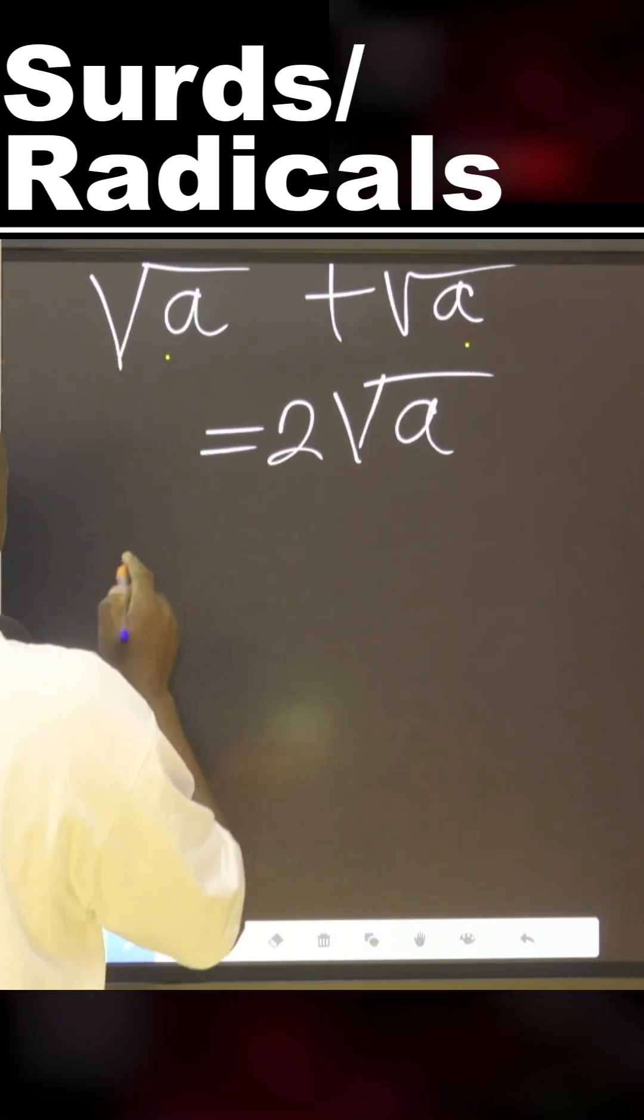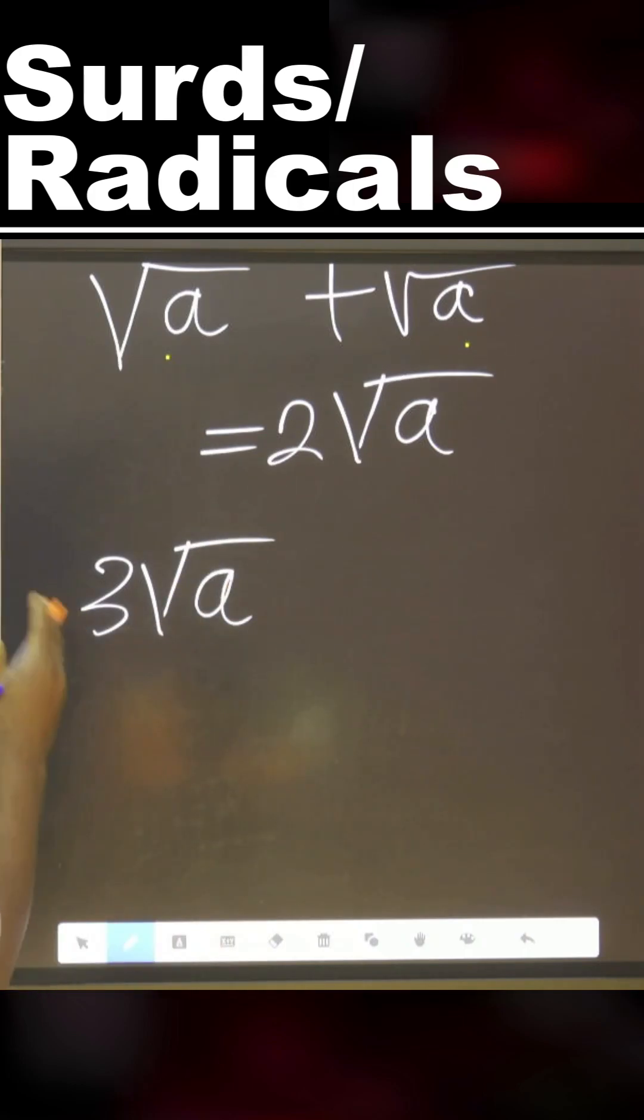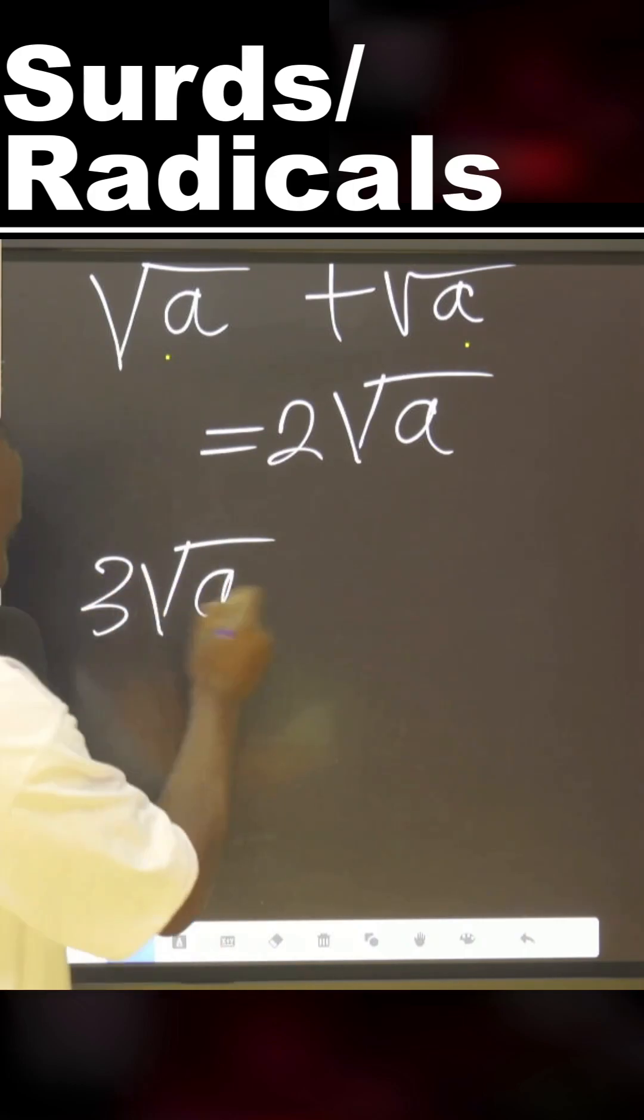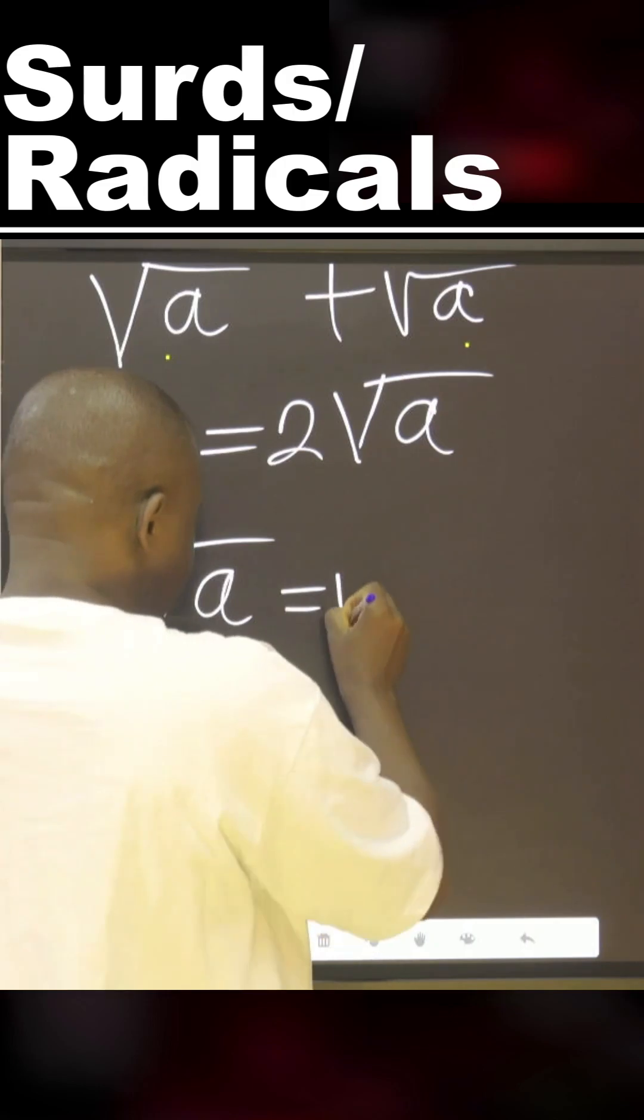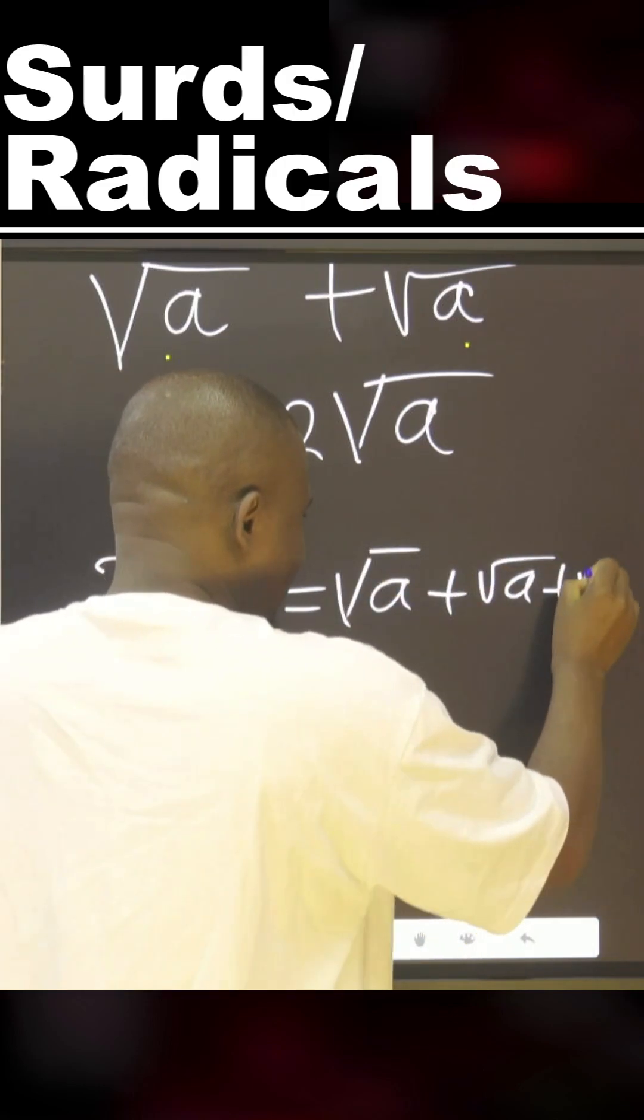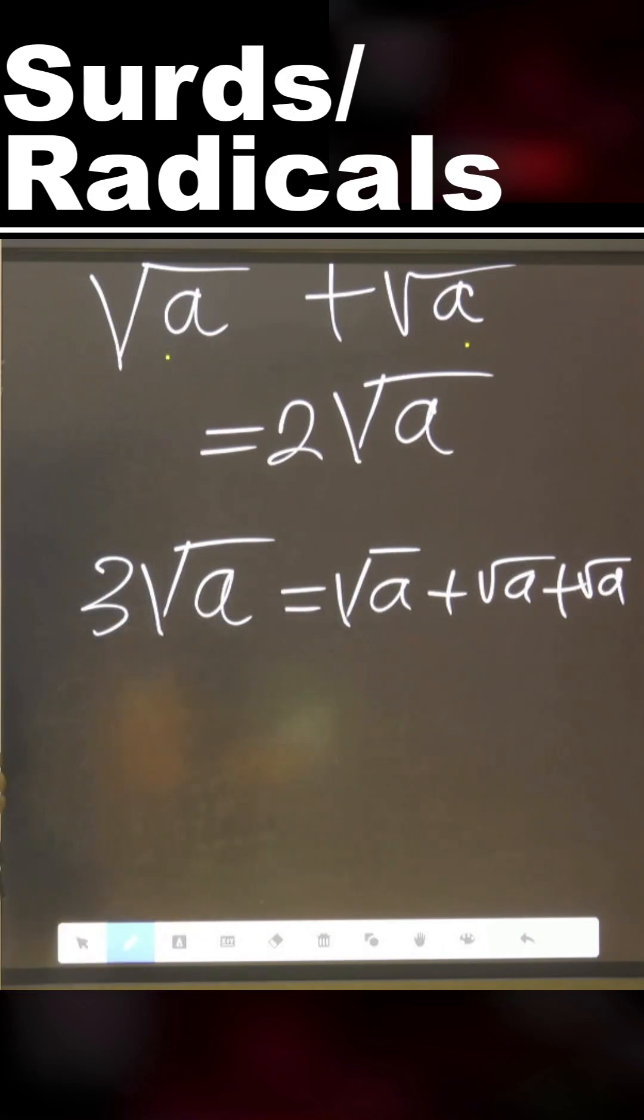If you do three square root of A, it means you can express this as this plus this plus this. There are three in number, or you can say three multiplied by this.